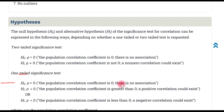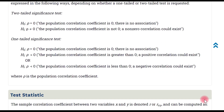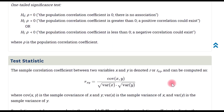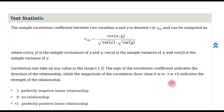In this hypothesis, when the correlation coefficient is 0, this is the null hypothesis. The alternative hypothesis considers positive correlation or negative correlation between two variables. The positive correlation coefficient is greater than 0, and the negative correlation coefficient is less than 0.